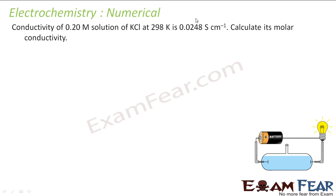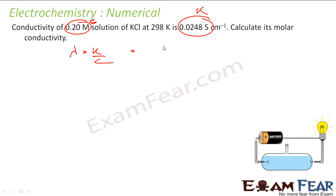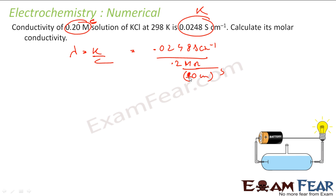Last question on molar conductivity: the conductivity K of a 0.2 M solution is given as 0.0248 S/cm. Find its molar conductivity. λm = K / C = 0.0248 S/cm ÷ (0.2 mol/L). Converting 0.2 mol/L to mol/cm³ (dividing by 1000) gives λm = 124 S·cm²/mol.